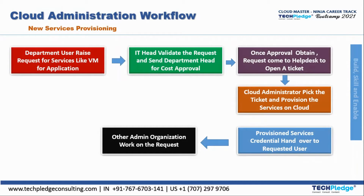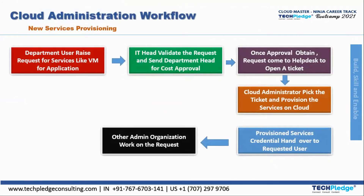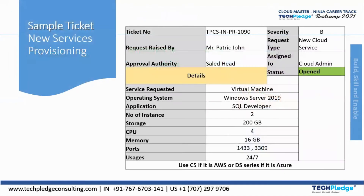This is how the cloud administration workflow works for new services provisioning. Here you can see a sample ticket for new services provisioning. Consider this as a sample. As per the workflow, there is a ticket number. You can also see the severity — what priority is to be given, whether it is critical or not.